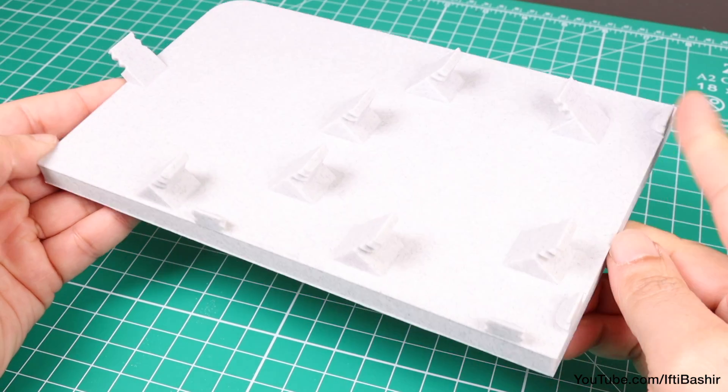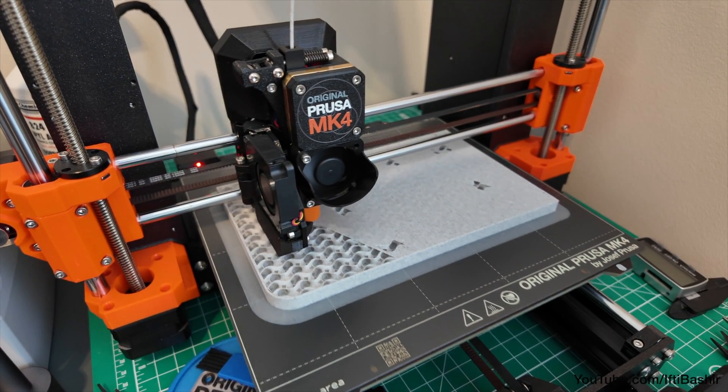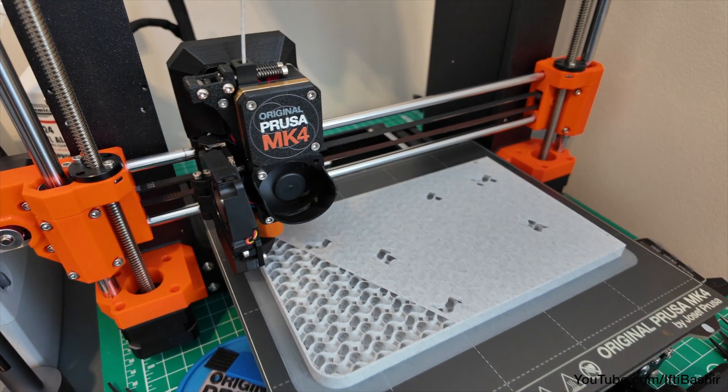I did find the corners would lift up while printing just a minute touch, and although the part has a large surface area and wouldn't come loose, it did annoy me so a brim quickly sorted that issue regardless.